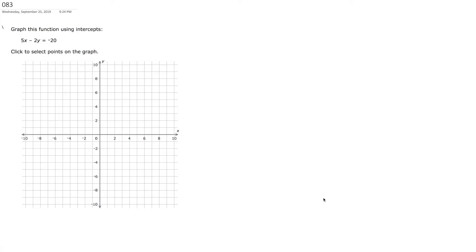Alright, so first of all, what type of equation is this? What does that graph look like, 5x minus 2y? How do you know it's linear, besides the fact that it says it?